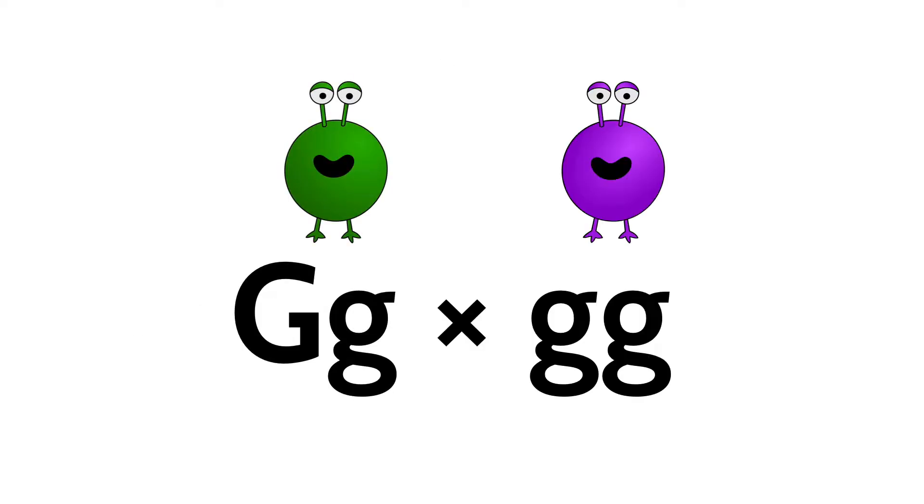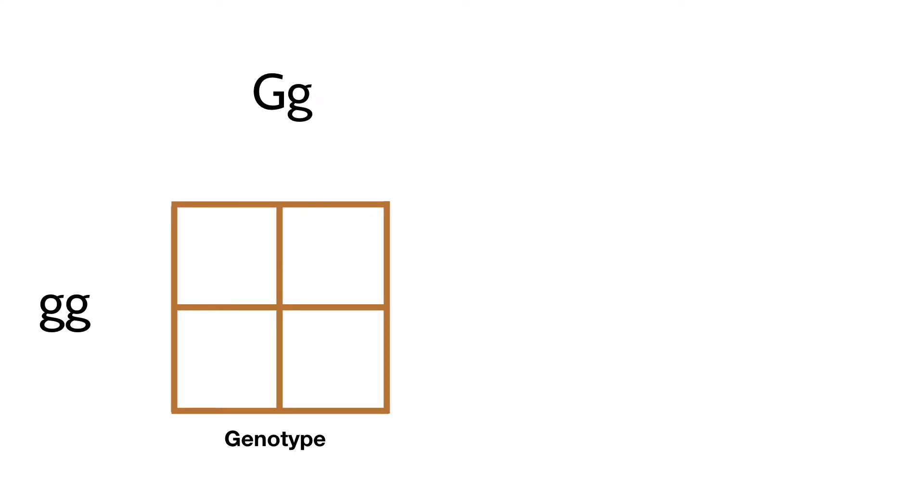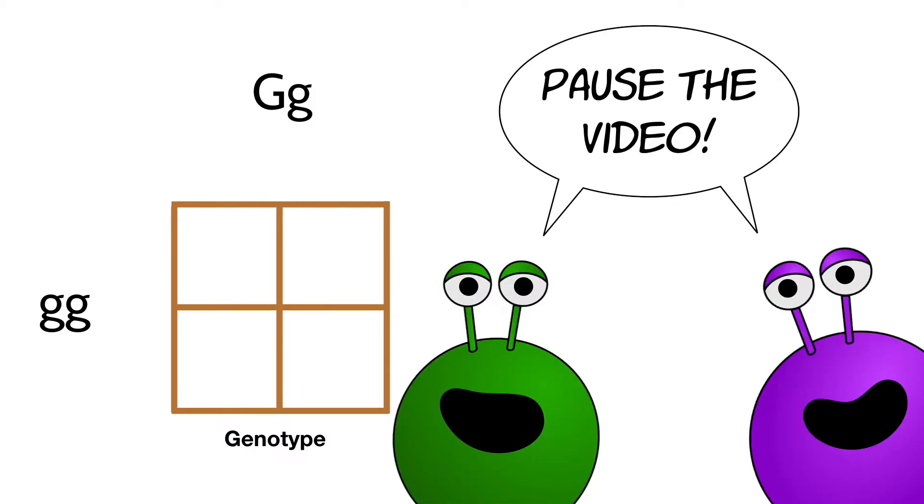Can you predict the outcome of this cross? Pause the video and take a minute to fill in this Punnett square. How many green and how many purple aliens do you predict we will find? If you printed out the worksheet that goes along with this video, now is the perfect time to pull it out.